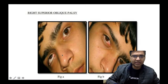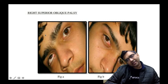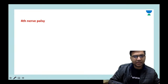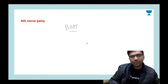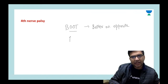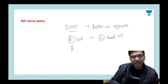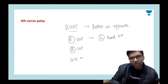In this picture, this position is called a tilt — this is a left head tilt and this is a right head tilt. Whenever you have a fourth nerve palsy or superior oblique palsy, the first thing to remember is BOOT: better on opposite tilt. So if the patient has a right superior oblique palsy, they would present with left head tilt.